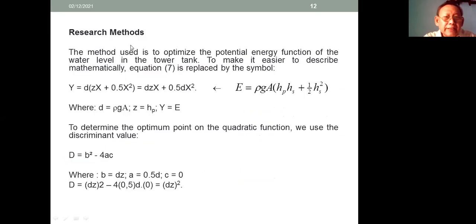Research methods. The method used is to optimize the potential energy function of the water level in the tower tank. To make it easier to describe mathematically, equation 7 is replaced by symbols.